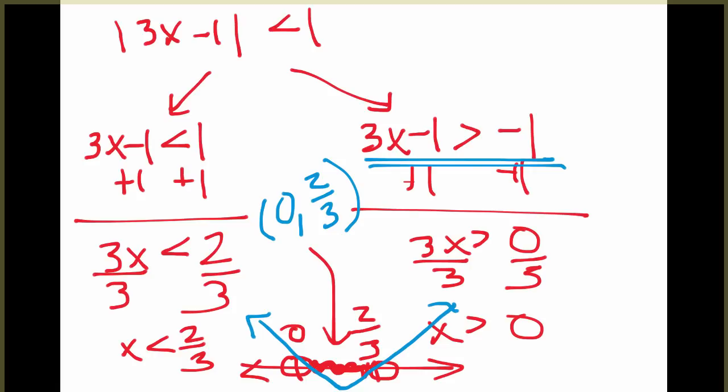notice here I want it to be less than 1. So less than is anywhere where it is below this x-axis here, or the line 1. And less than would be the bottom of the V, wherever it is below the line, which again is from 0 to 2 thirds.